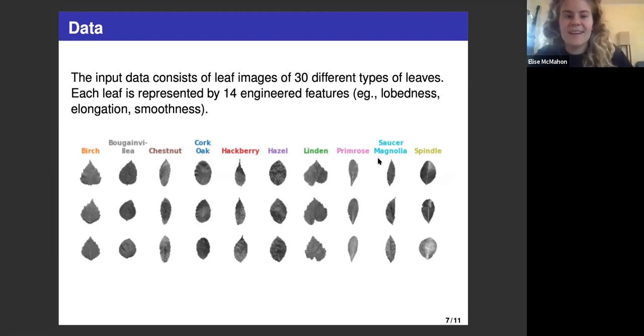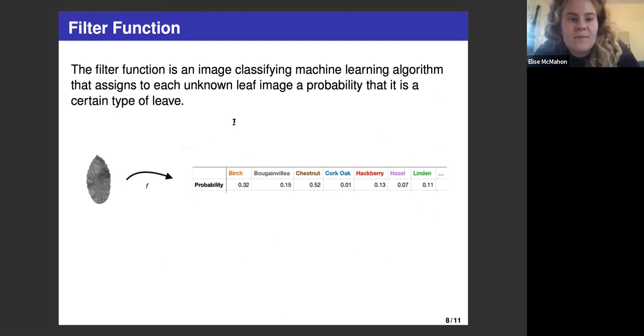Throughout this, the colors here refer to which leaf type. If you see red, we're thinking of the hackberry, for example. The filter function is an image classifying machine learning algorithm that assigns to each unknown leaf image a probability that it is a certain type of leaf. In this picture here, we have some unknown leaf, and the algorithm is assigning a probability to each of the leaf types.